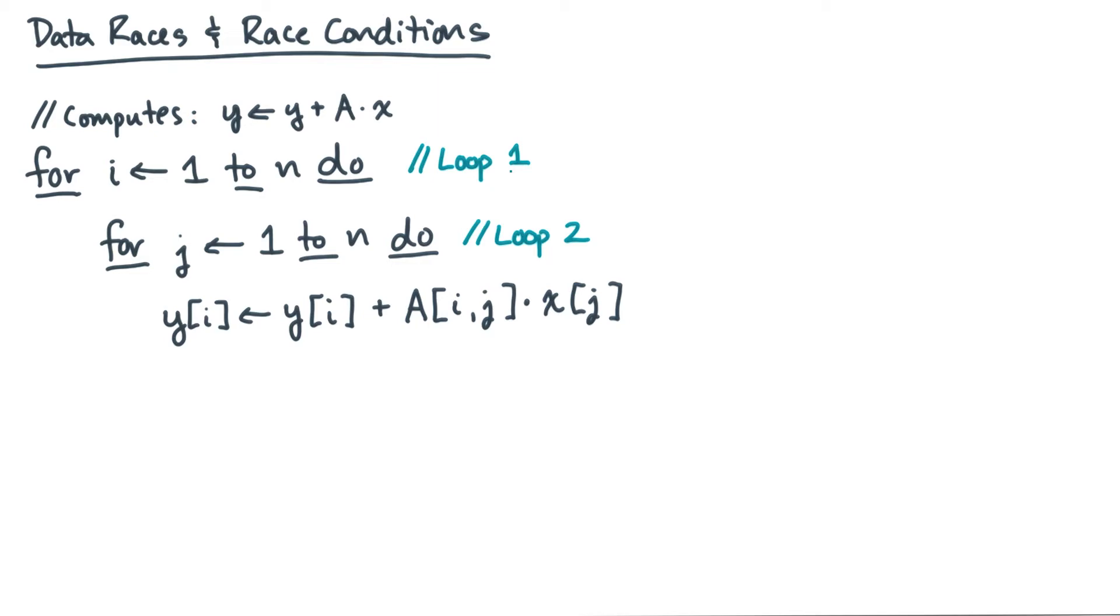I want to briefly explain why in this matrix vector multiply example, it's not safe to make the innermost loop a parallel loop.